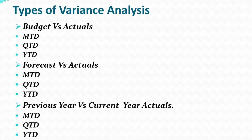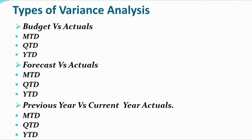For budget versus actuals: whatever budget we made for revenue and P&L items, when the month end closes and actuals come in, we do a line-by-line comparison to check if we are getting favorable or unfavorable results, then identify reasons and document comments. Same process applies for forecast versus actuals — checking if spending and revenue are in line with expectations, and if not, updating the rest-of-year forecast to be more accurate.